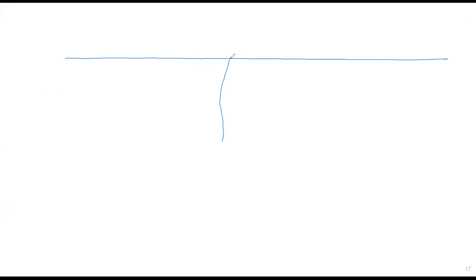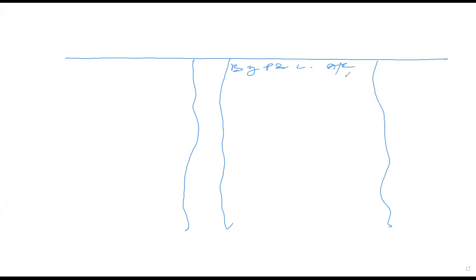In the Profit and Loss Appropriation Account, the first thing we need is the net profit from the Profit and Loss Account. From the P&L account, the actual profit given is four lakh thirty thousand rupees. I'm writing it inside because in the appropriation account we can only take the net profit after all expenses have been deducted.